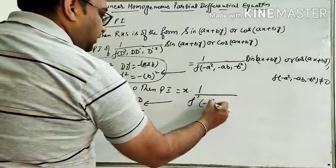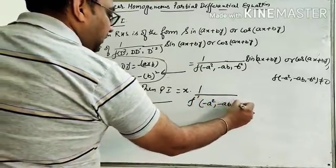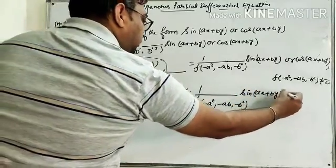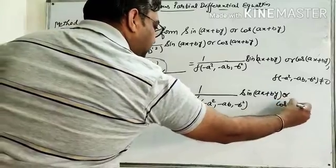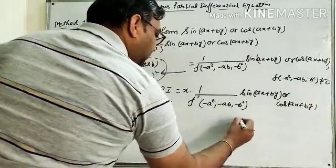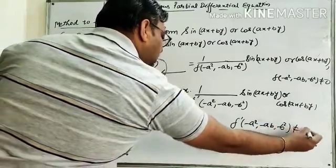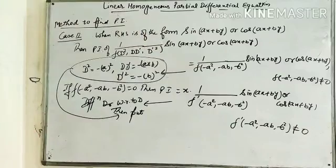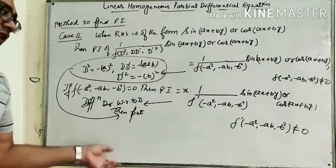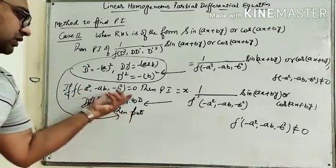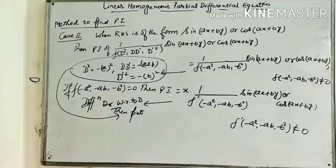After differentiating, evaluate f'(−A², −AB, −B²) · sin(Ax + By) or cos(Ax + By), provided f'(−A², −AB, −B²) ≠ 0. If again it equals 0, then again multiply by x, differentiate with respect to D, and replace the condition. For better understanding, we will discuss a few questions based on this.